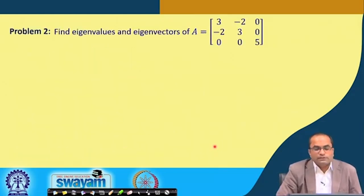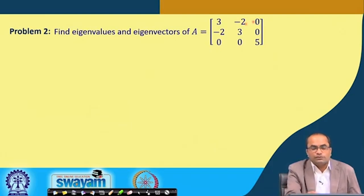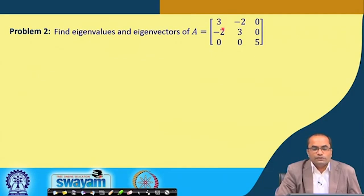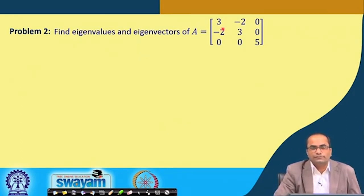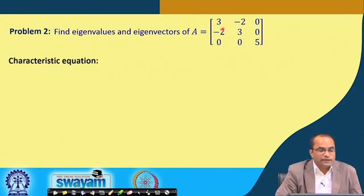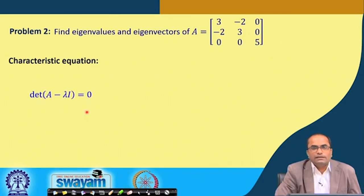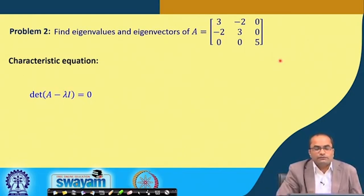Another problem: this is a 3×3 matrix — 3, −2, 0 and so on. Here again we want to find the eigenvalues and eigenvectors of this 3×3 matrix. We follow the same steps: first write down the characteristic equation from which we get the eigenvalues. The characteristic equation is det(A − λI) = 0; we subtract λ from the diagonal entries, which are 3, 3, and 5.